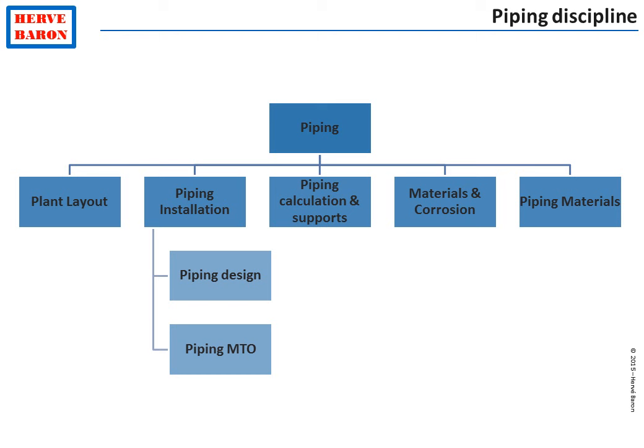In this module we will look at the remaining disciplines, which are piping installation, in charge of the routing of lines; piping calculation and supports, in charge of the calculation to confirm the routing that has been designed by piping installation and to define the types of supports required for the lines; and piping materials, in charge of specifying and ordering all piping materials.